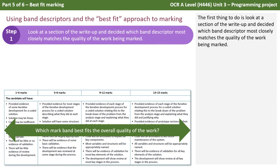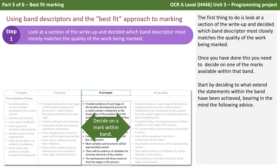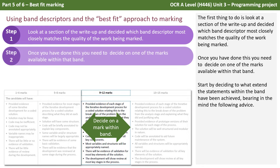The first thing to do is look at a section of the write-up and decide which band descriptor most closely matches the quality of the work being marked. Once you've done this, you now need to decide on one of the marks available within that band.